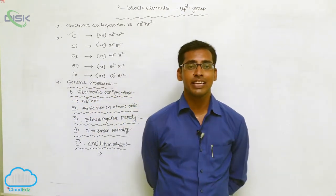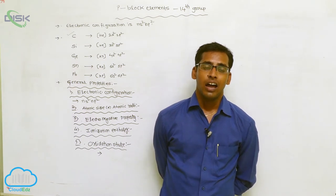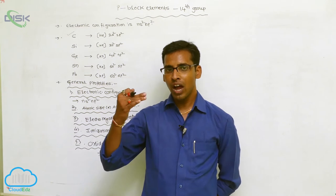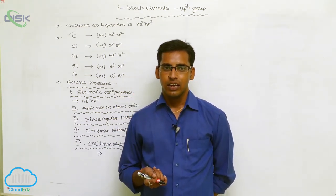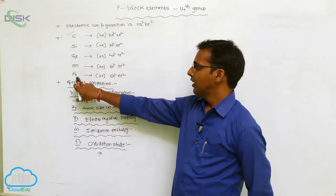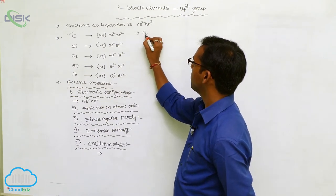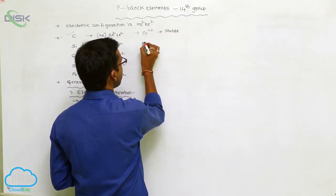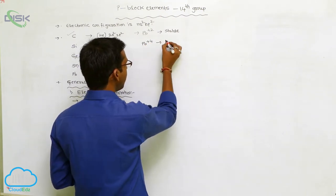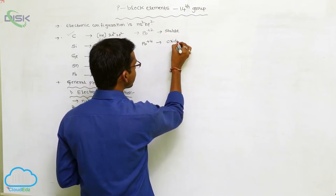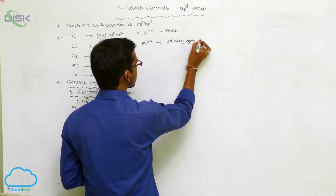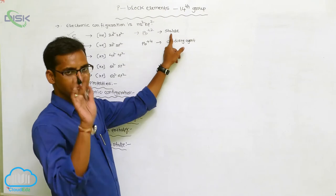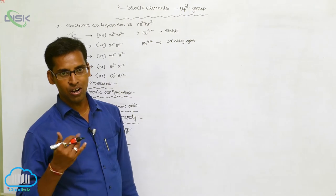Group 4A elements exhibit +4 and +2 oxidation states. The +4 oxidation state becomes more stable going down the group. Lead in the +2 state (Pb²⁺) is stable, whereas lead in the +4 state (Pb⁴⁺) acts as a strong oxidizing agent.